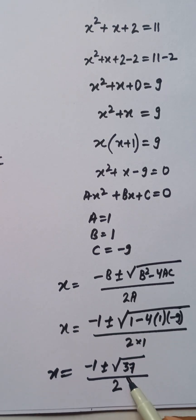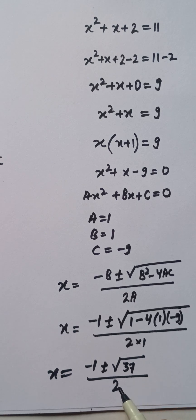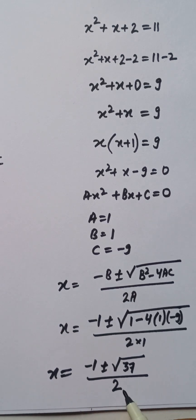So we have the value for x as minus 1 plus or minus root 37 divided by 2. There are two real roots of this problem. First one is x equals minus 1 plus root 37 by 2, another is minus 1 minus root 37 by 2. And this is the solution of this problem.